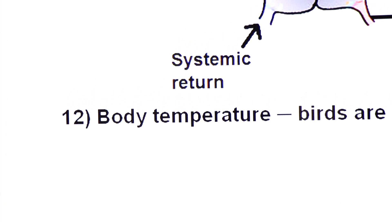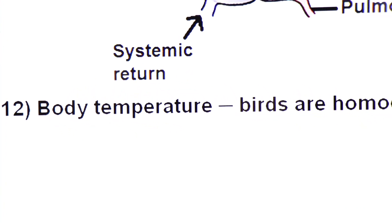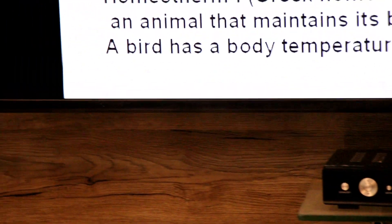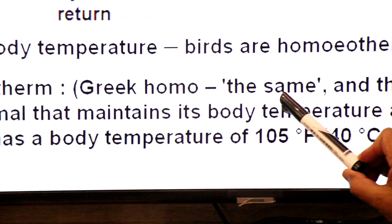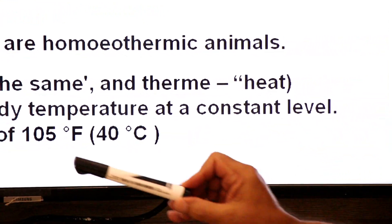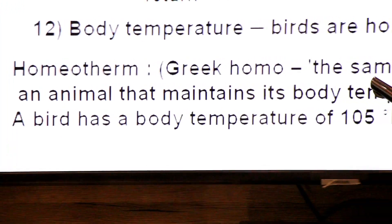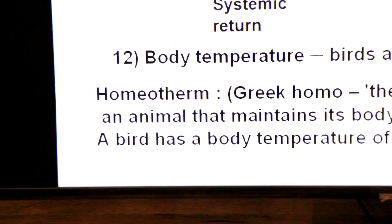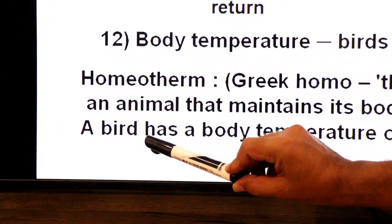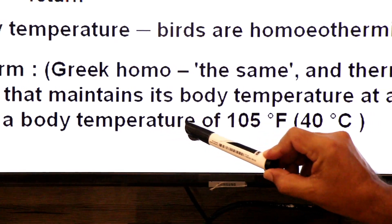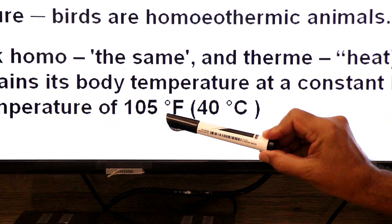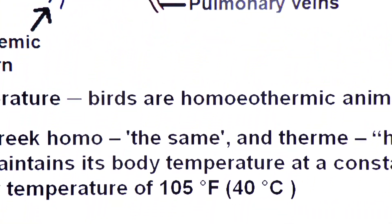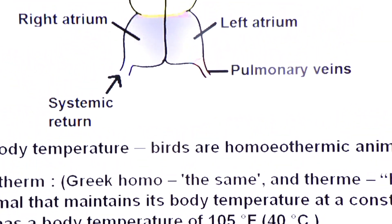Birds maintain their body temperature — they are homeothermic animals. Homeothermic comes from Greek: 'homo' meaning same, and 'thermi' meaning heat. An animal that maintains its body temperature at a constant level is homeothermic. A bird has a body temperature of about 105°F, equal to 40°C.